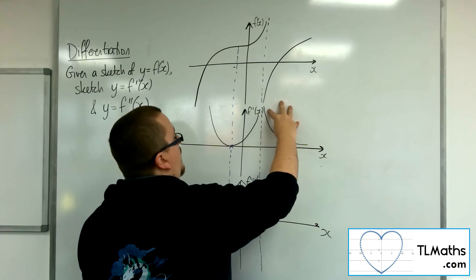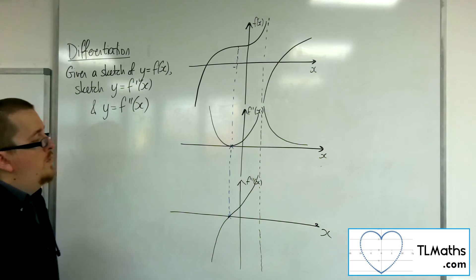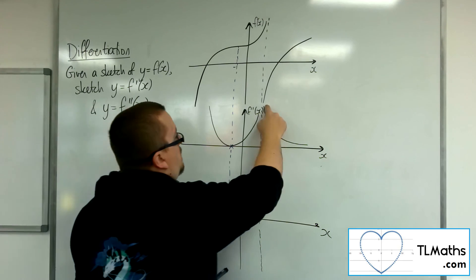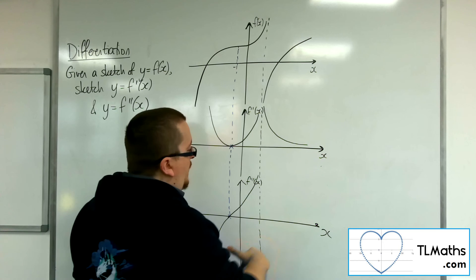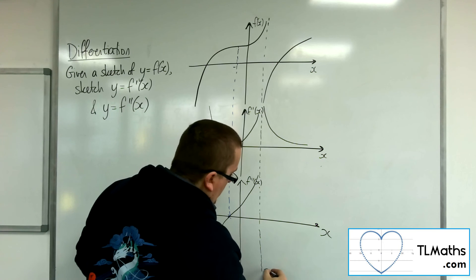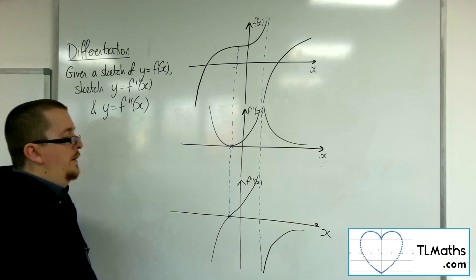Now, as for this curve here, we've got continuous negative gradient, which seems to be getting closer and closer to zero. So now it would look something like that.